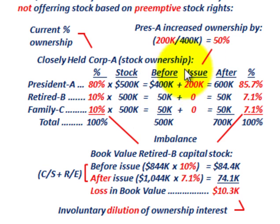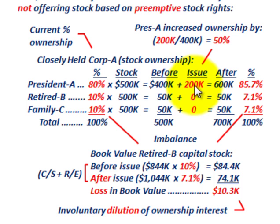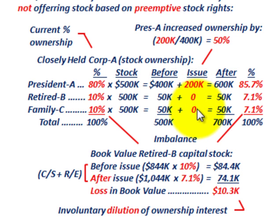President A went out and issued himself $200,000 worth of additional stock. That was allowed because the board of directors had declared a total dollar amount that could be issued. So president A gives himself $200,000. The argument is that retired stockholder B and family members C didn't get a chance to buy in, because the preemptive rights were voided or president A didn't follow them. So retired member B and family member C had zero — they were not allowed to buy into it.